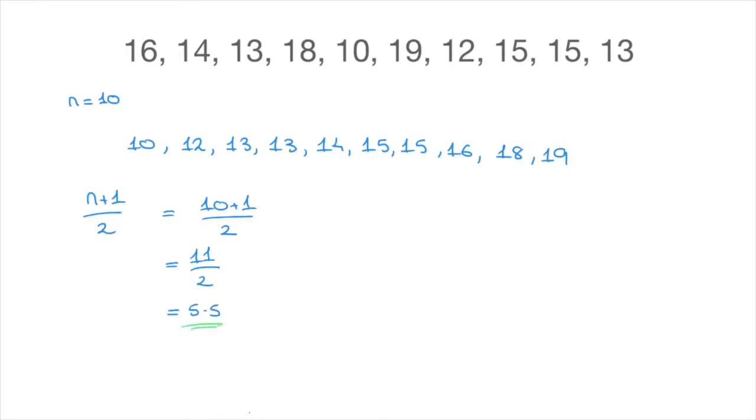Careful, that's the position of the median value in this list. Now, what this tells us is that the median value is in between the fifth and the sixth value. And looking at our list here, since the fifth value is fourteen and the sixth value is fifteen, the median value is somewhere in between these two values.